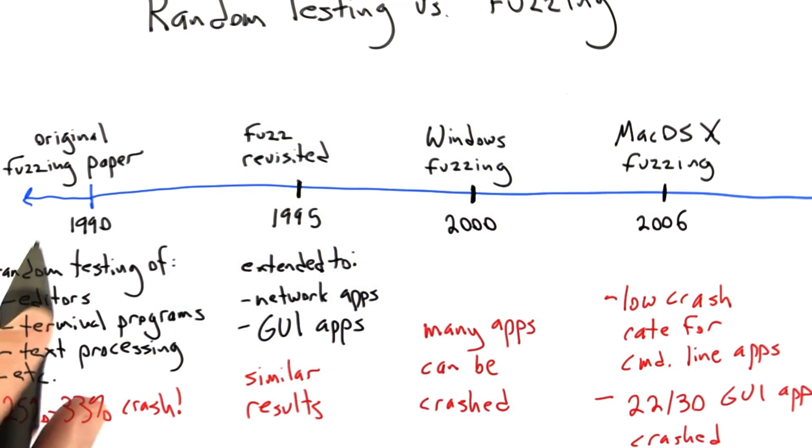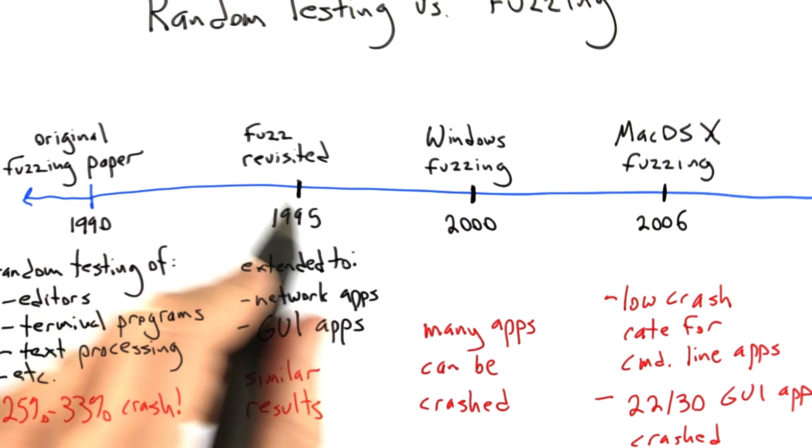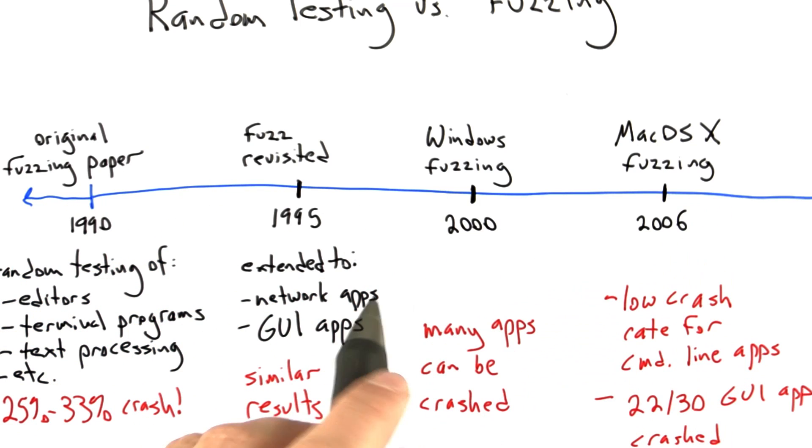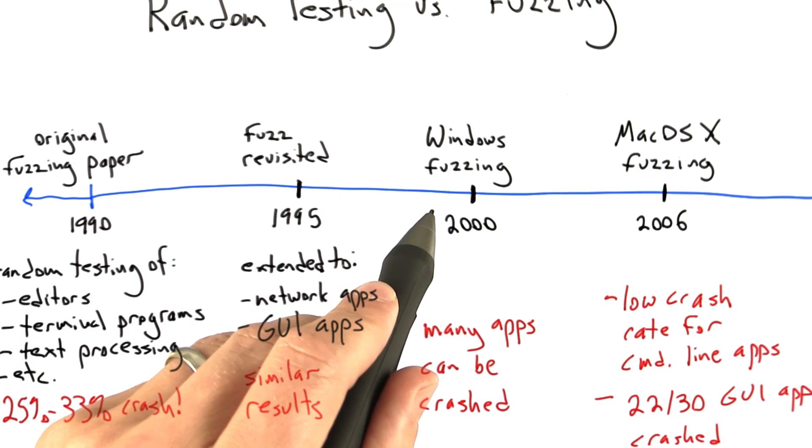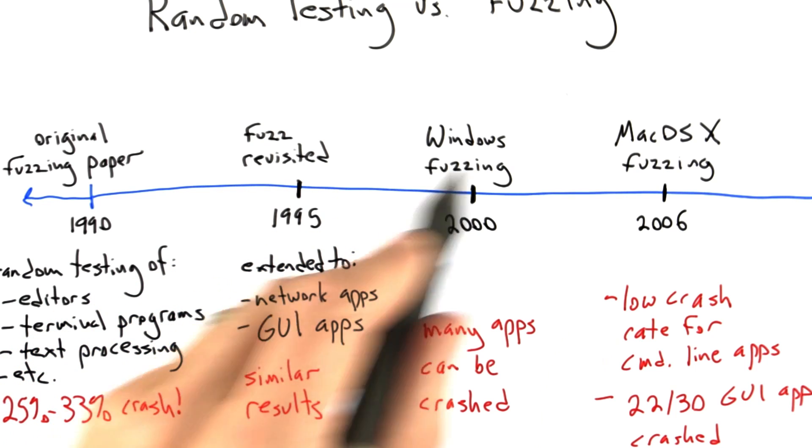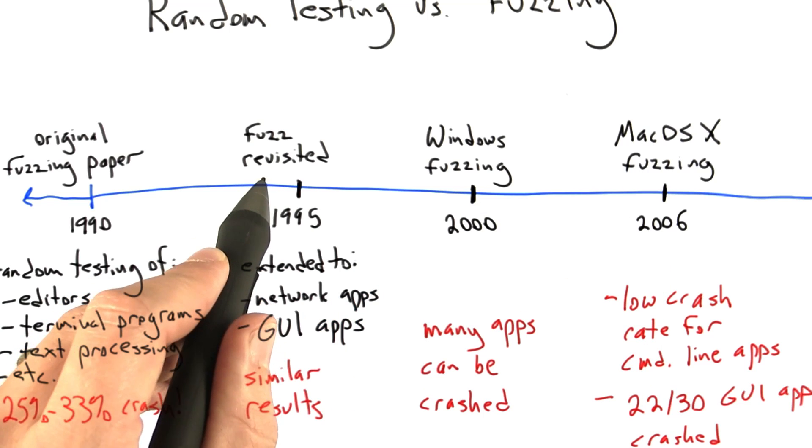It's worth mentioning that as this group evolved their fuzzing work, they kept having to write new tools. For example, to fuzz the Windows applications, they had to generate Windows events to GUI applications. They had to do something similar for Mac OS and previously for X Windows applications. So they had to keep evolving their tools.